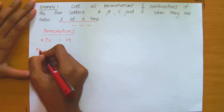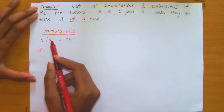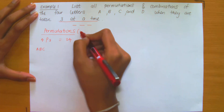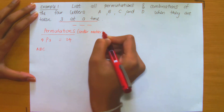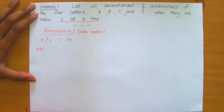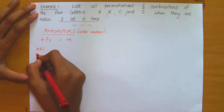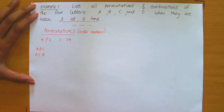So starting with A, B, C — in how many other ways can I arrange this? Remember, permutations mean order matters. So with A in position 1, if I now place it in position 2, that creates a different permutation. For now, let's leave A in position 1 and swap B and C, giving A, C, B. That's another permutation.